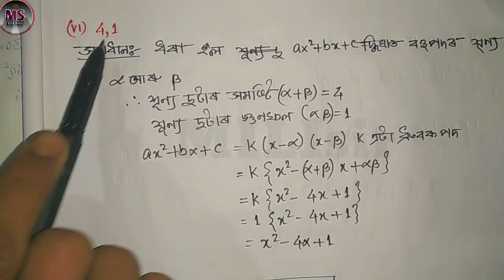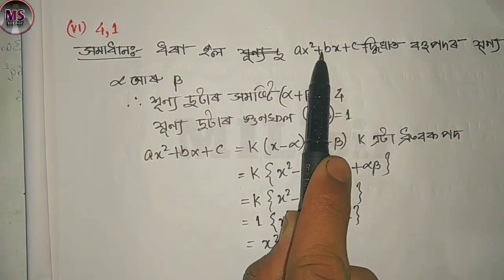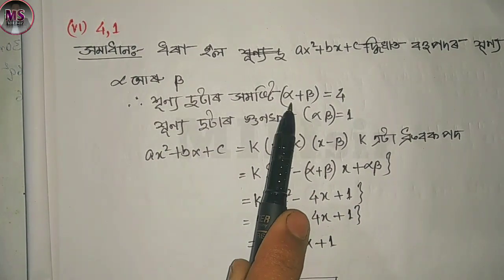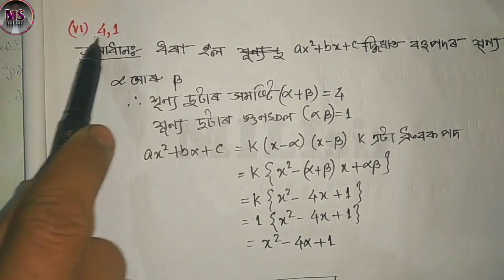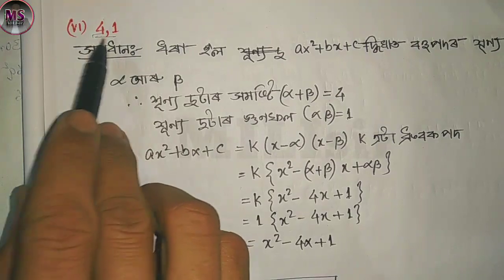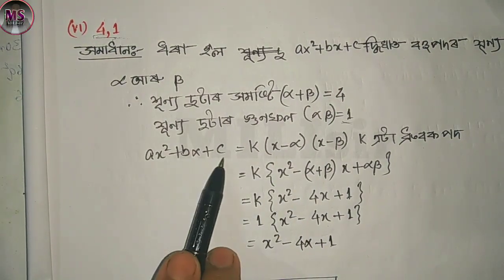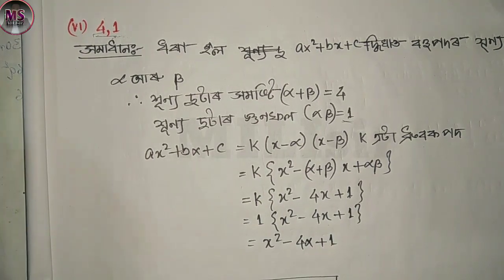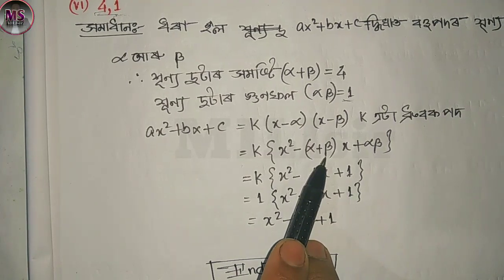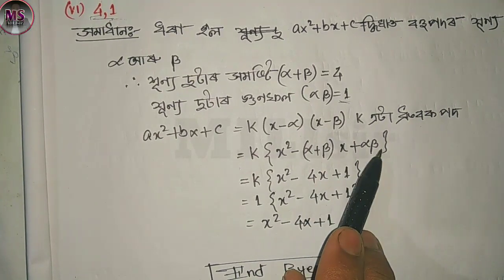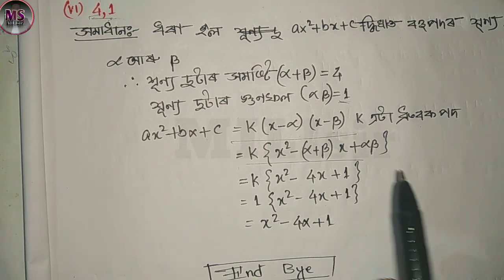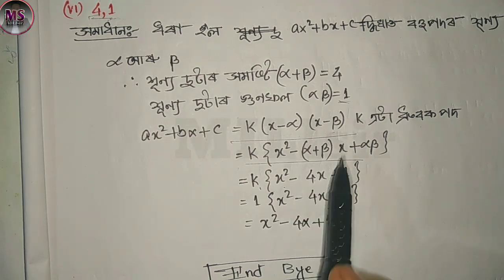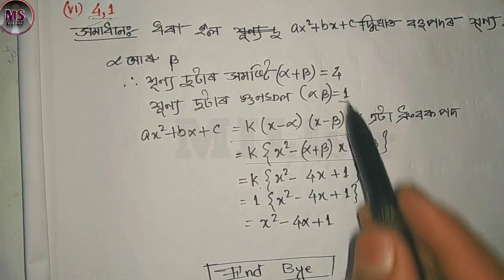Next question: x squared plus b x plus c — the number of x squared plus b x plus c. This means alpha into beta equals 1. Times k equals x minus alpha and x minus beta, which means we have 0. So x minus alpha plus beta: alpha plus beta equals 4.